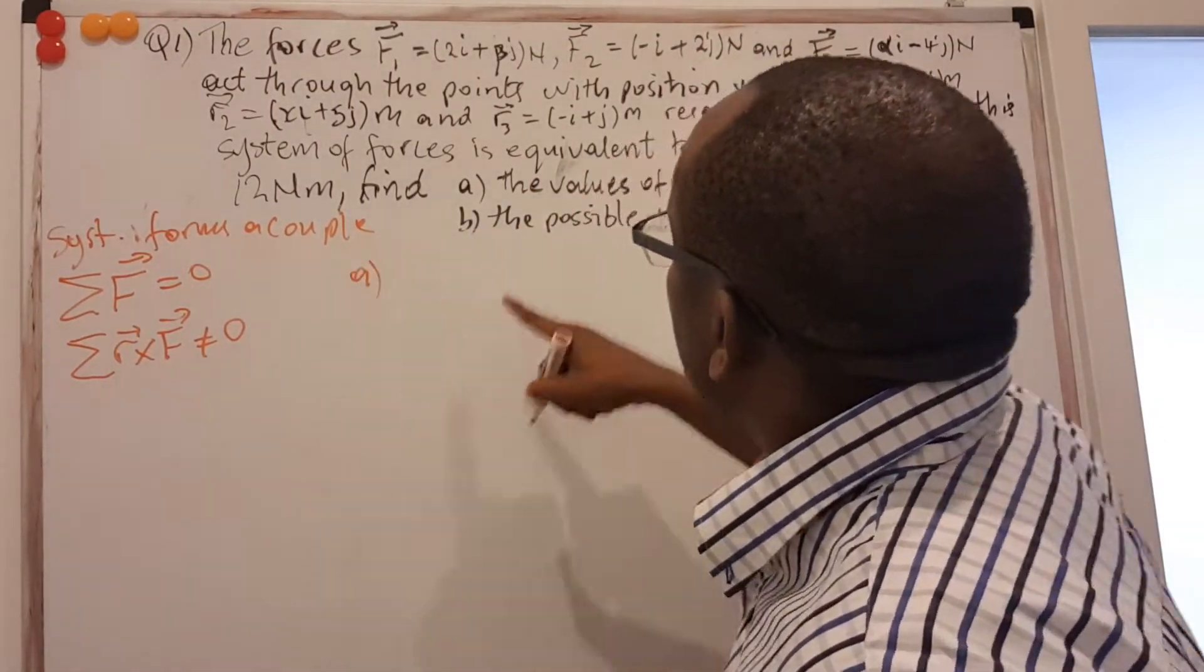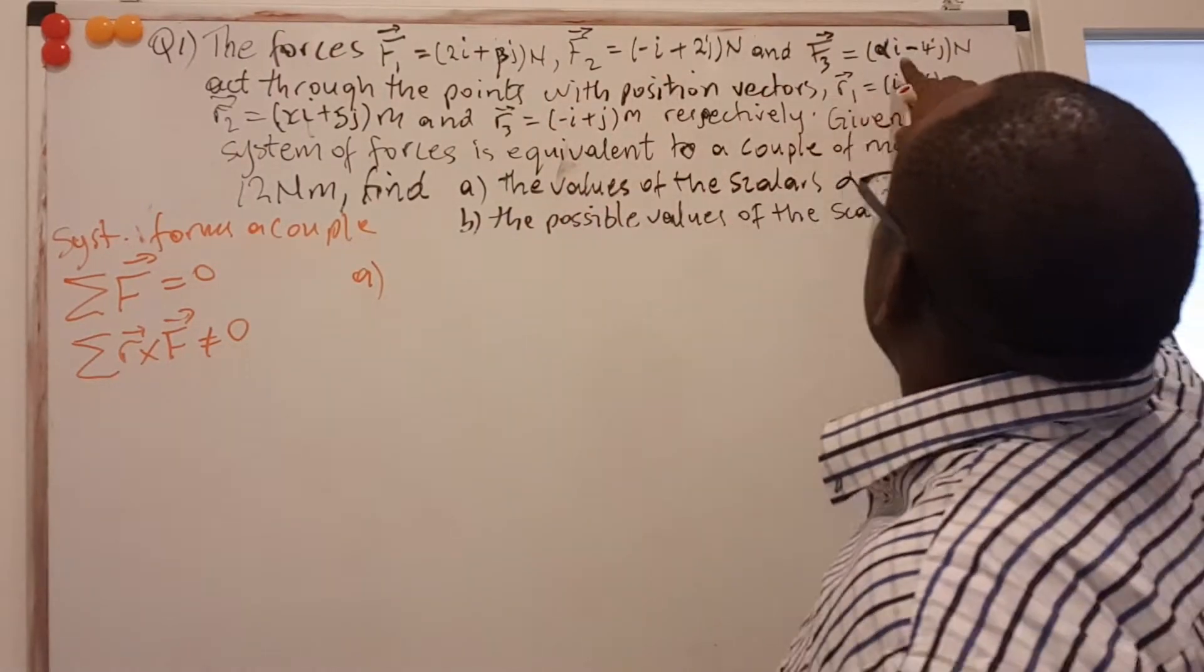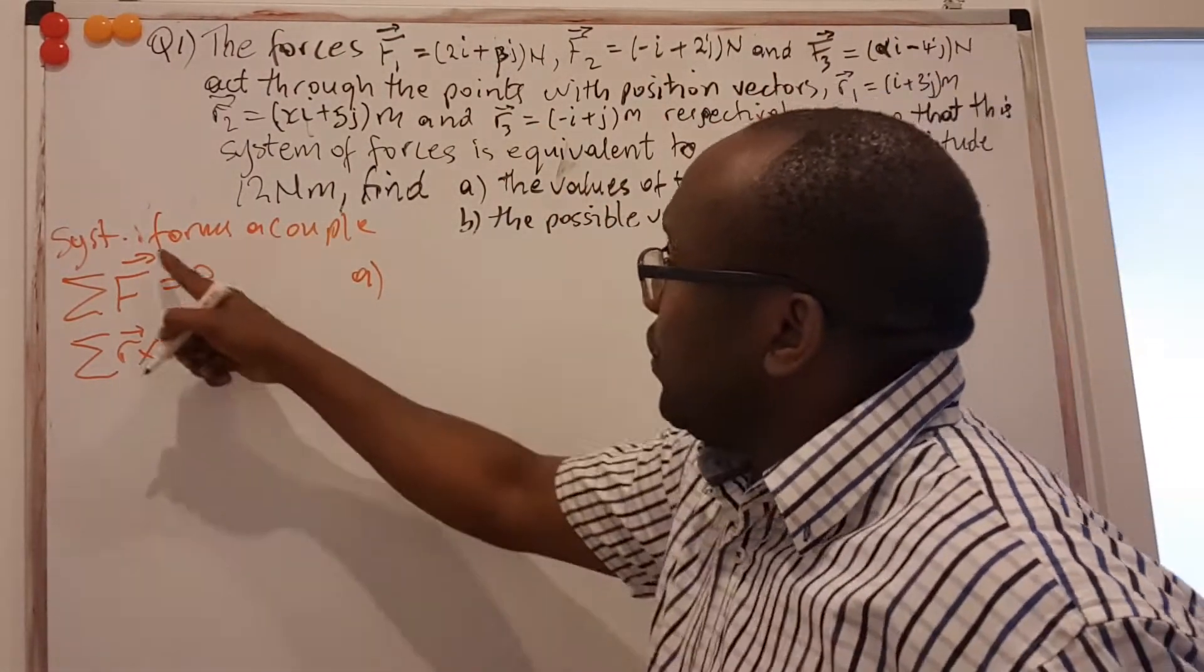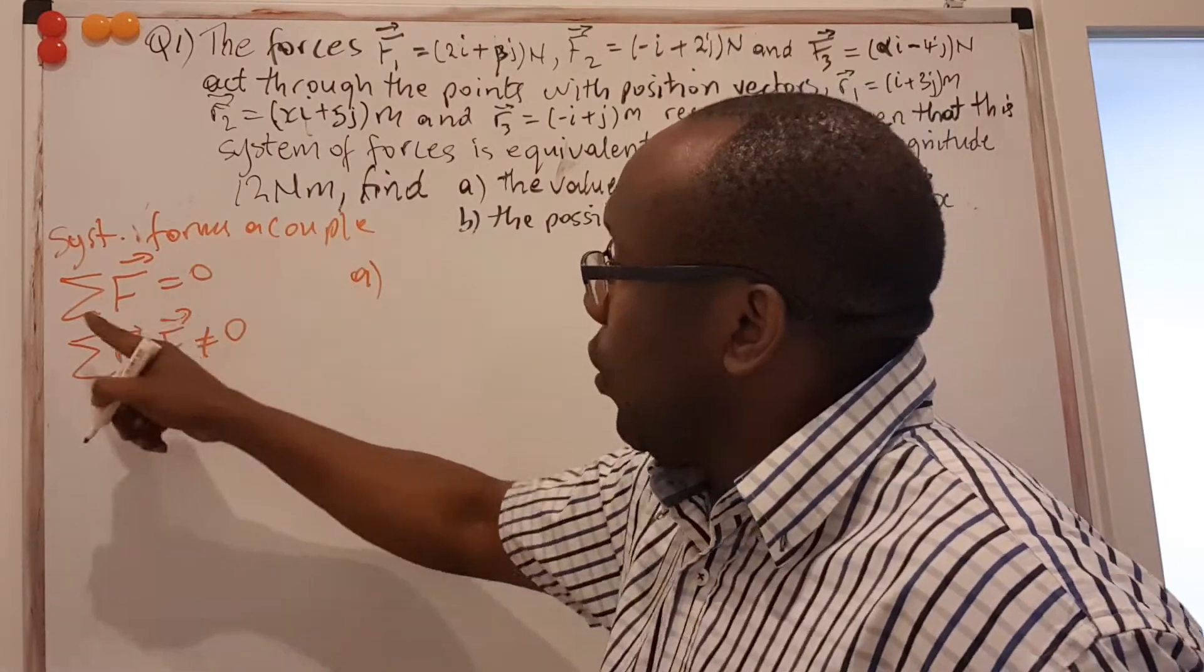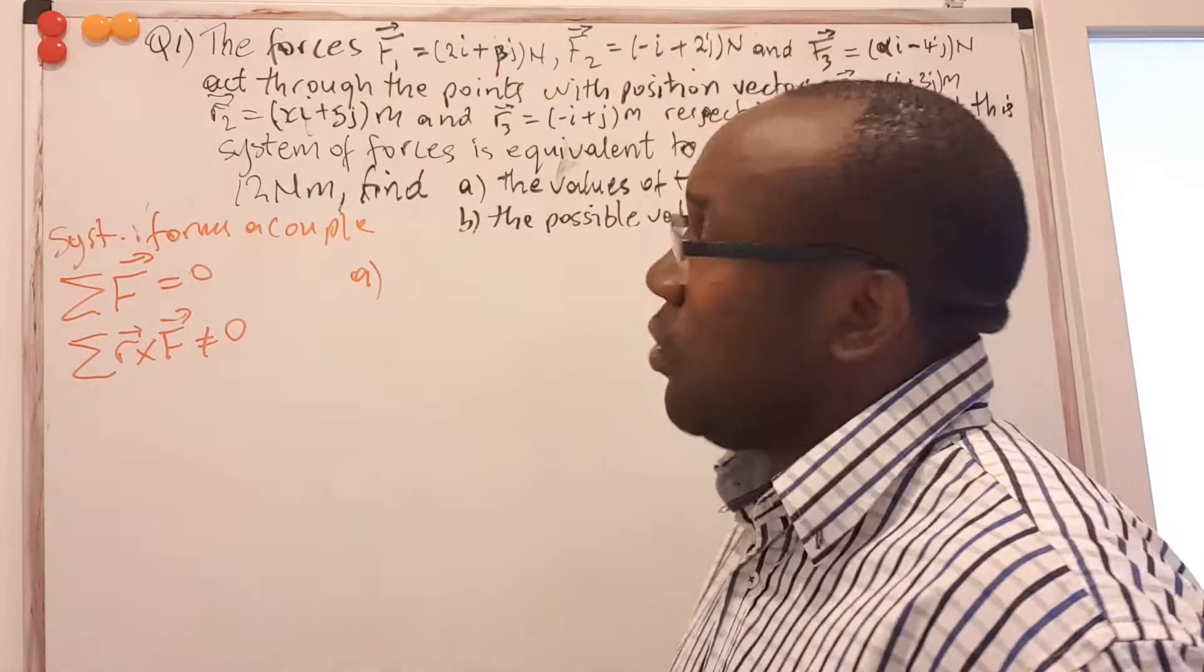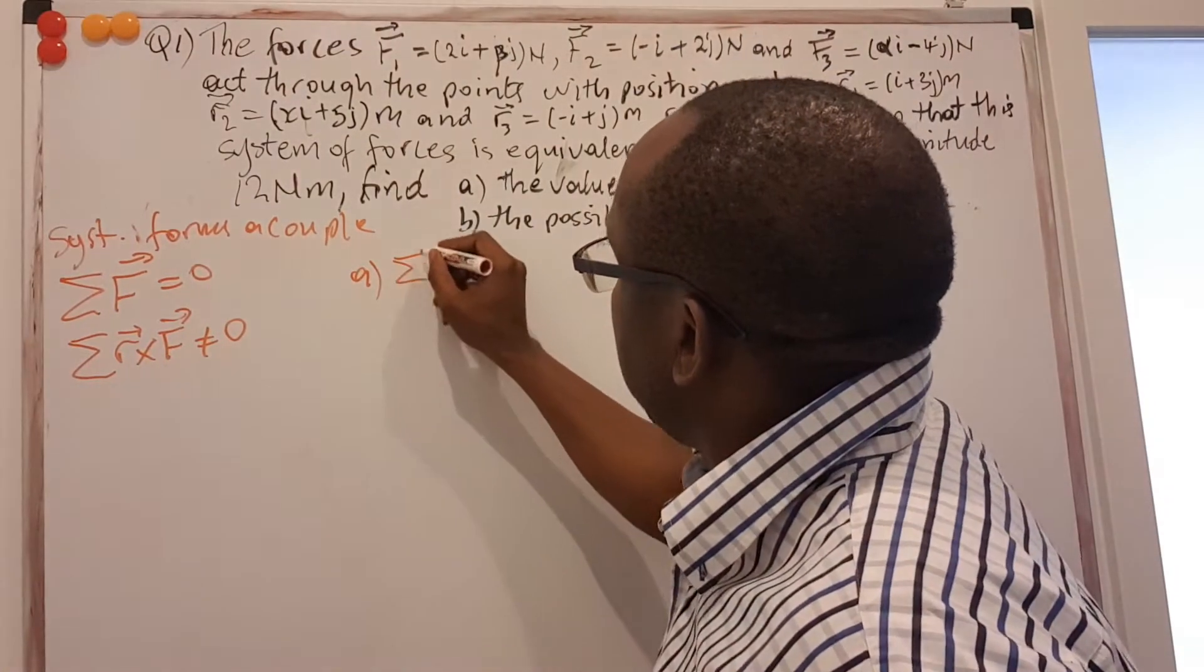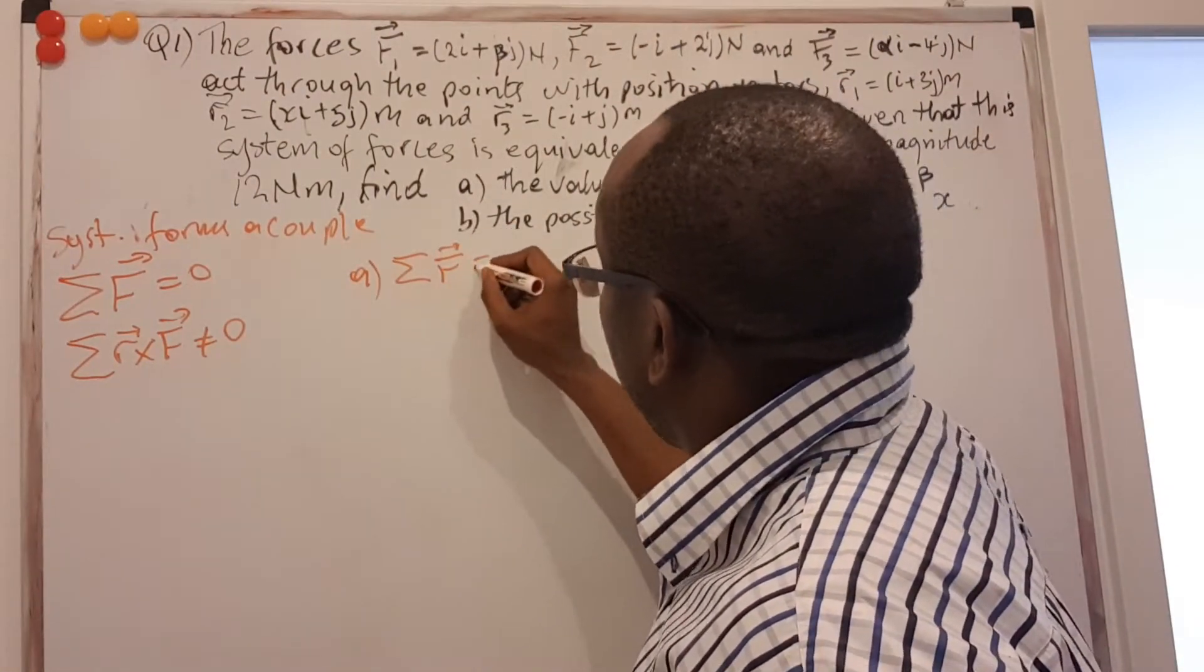So we will start with the first part. We are told to look for the values of alpha and beta. We take the first part. We already told that this system forms a couple. So we show the sum of the forces should be equal to zero.